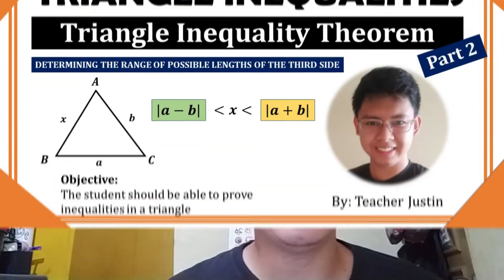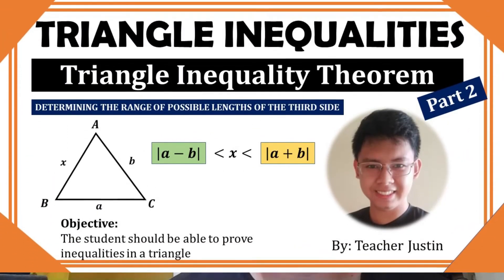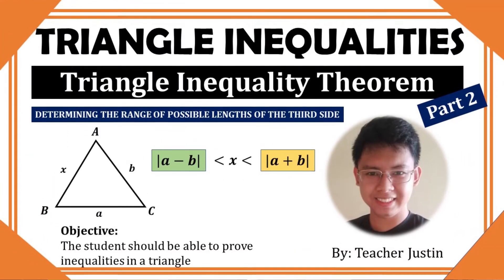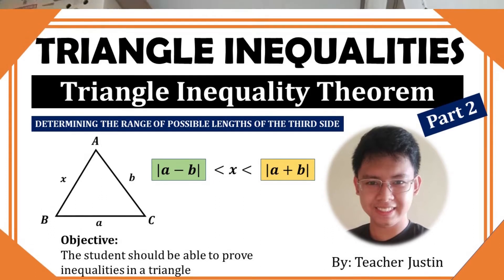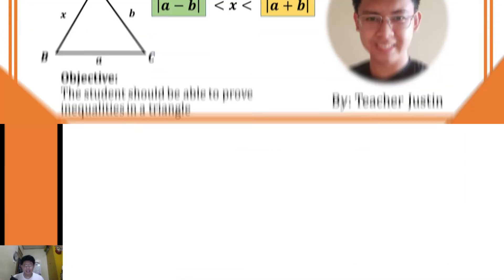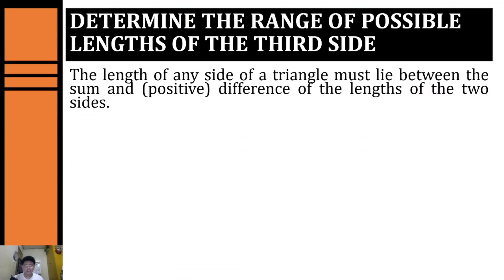Good day everyone, welcome to Math with Teacher Justin. On today's topic we're going to determine the range of possible lengths of our third side. The length of any side of a triangle must lie between the sum and positive difference of the lengths of the two sides.